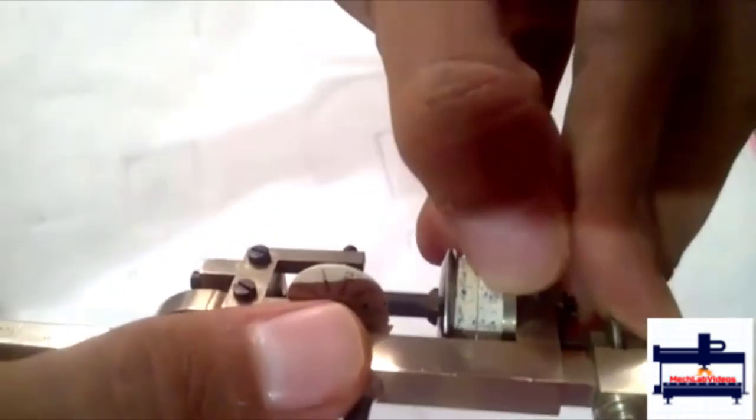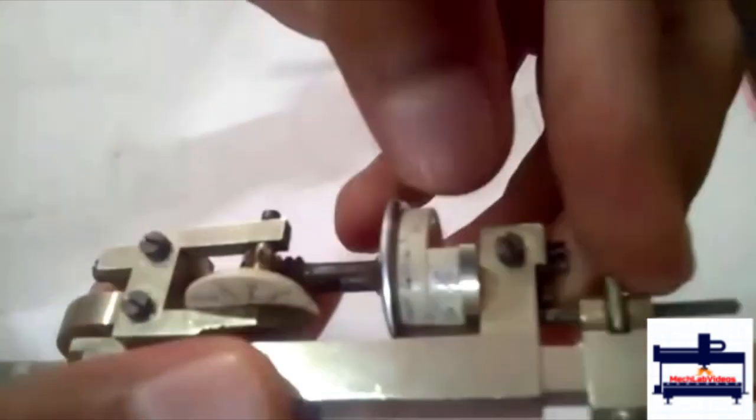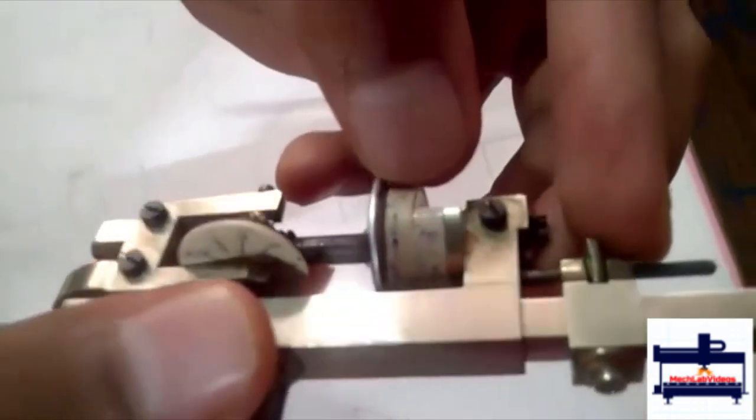To check the drum reading, you look at the first digit that comes before the vernier scale begins. So this is the beginning of the vernier scale and this is the first digit which is 1 before the vernier scale.